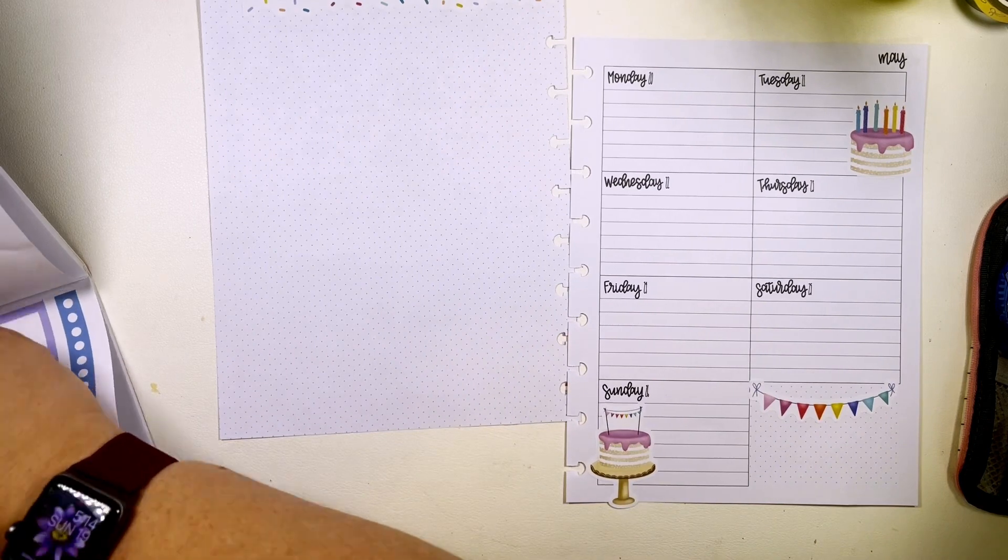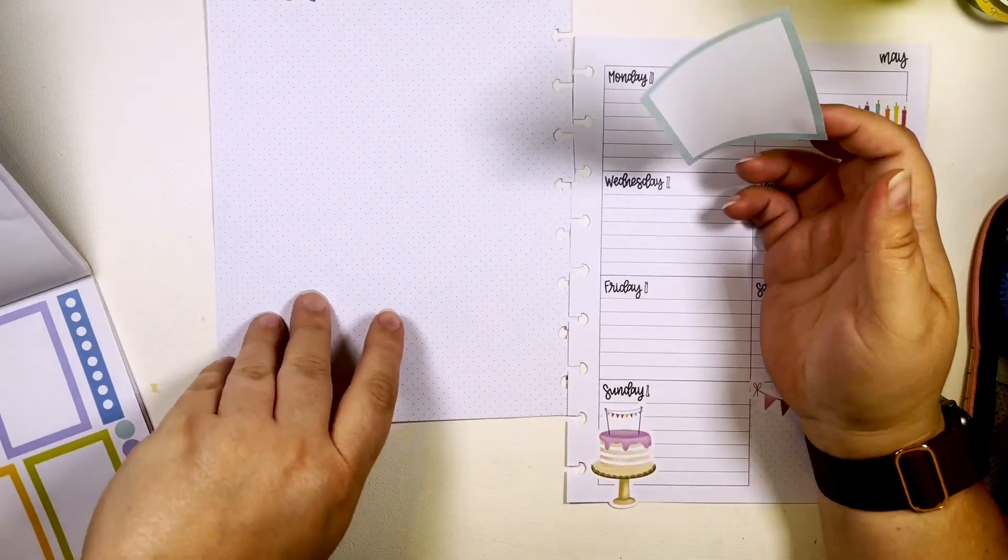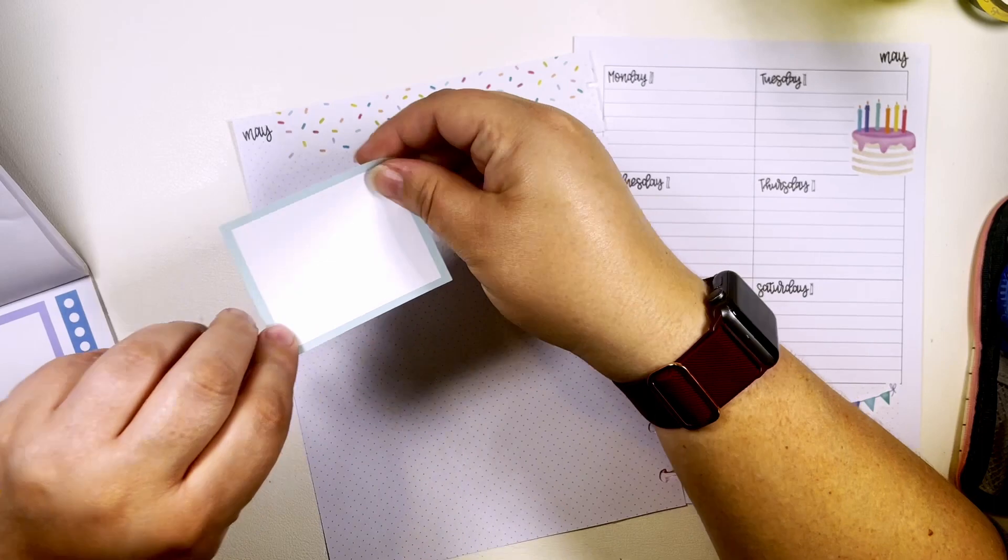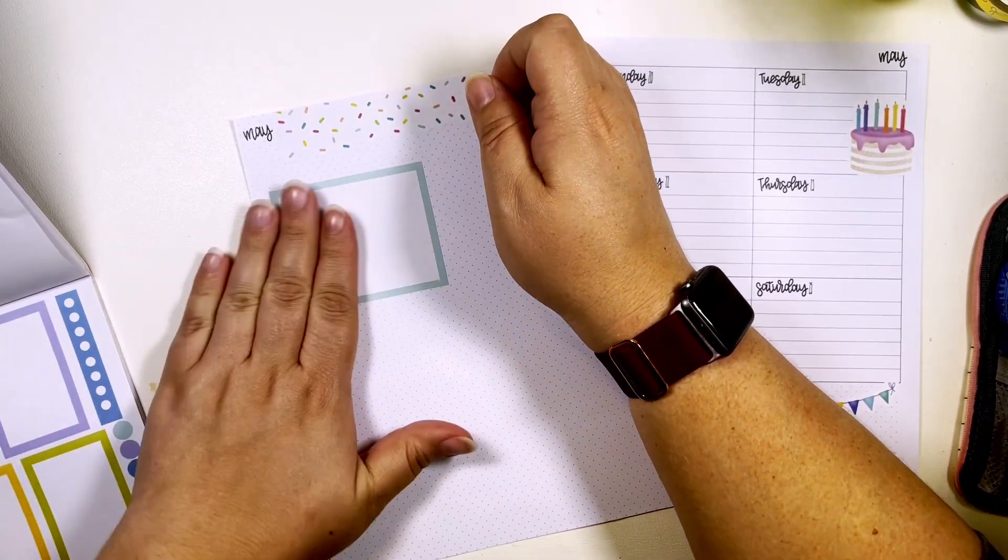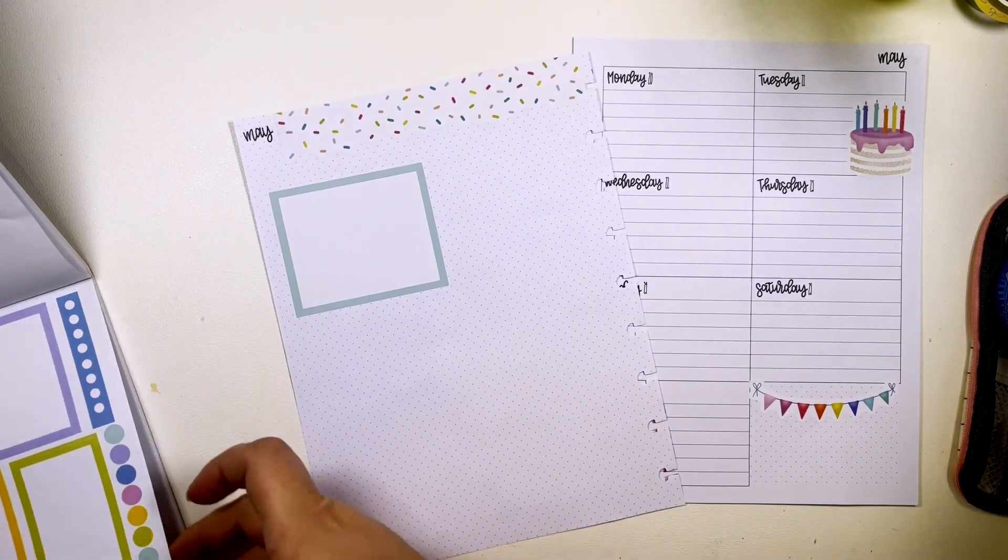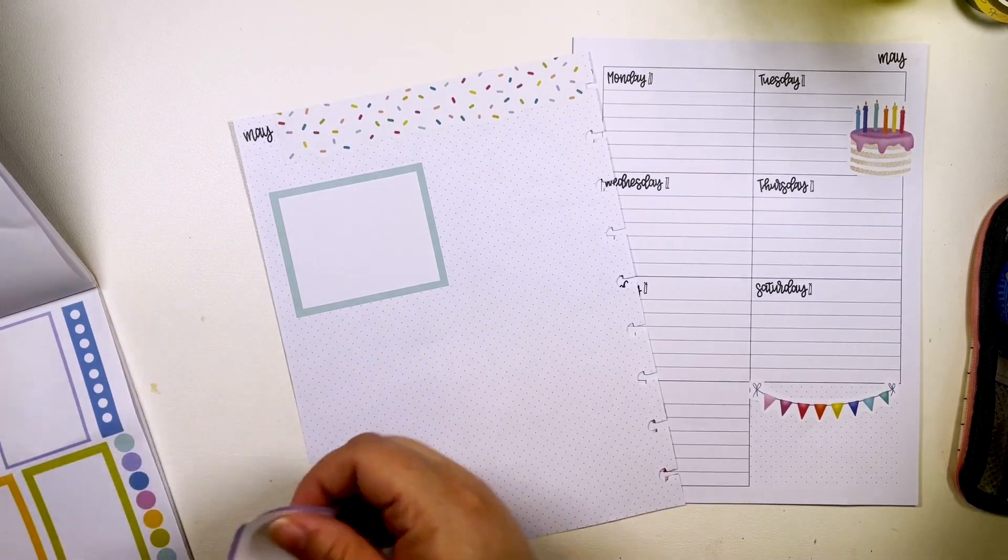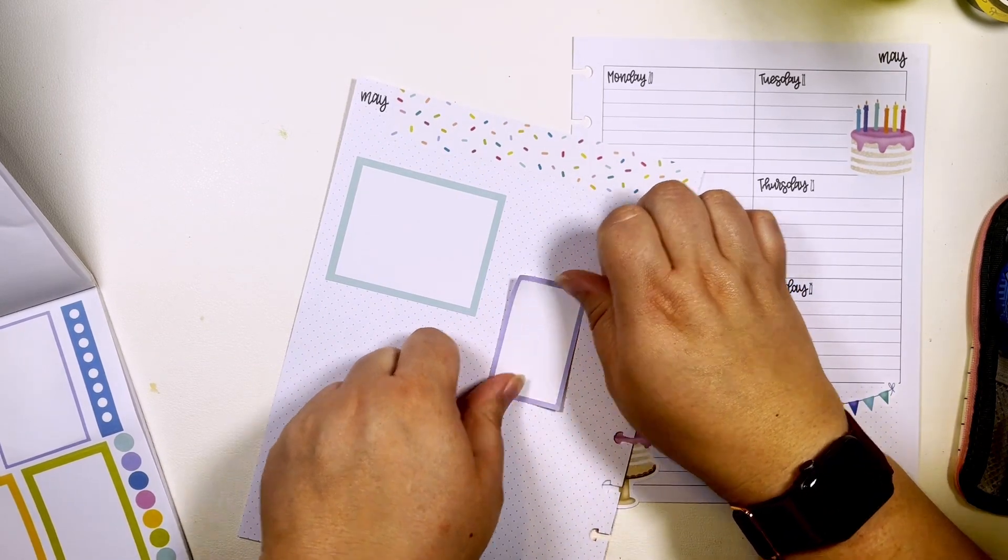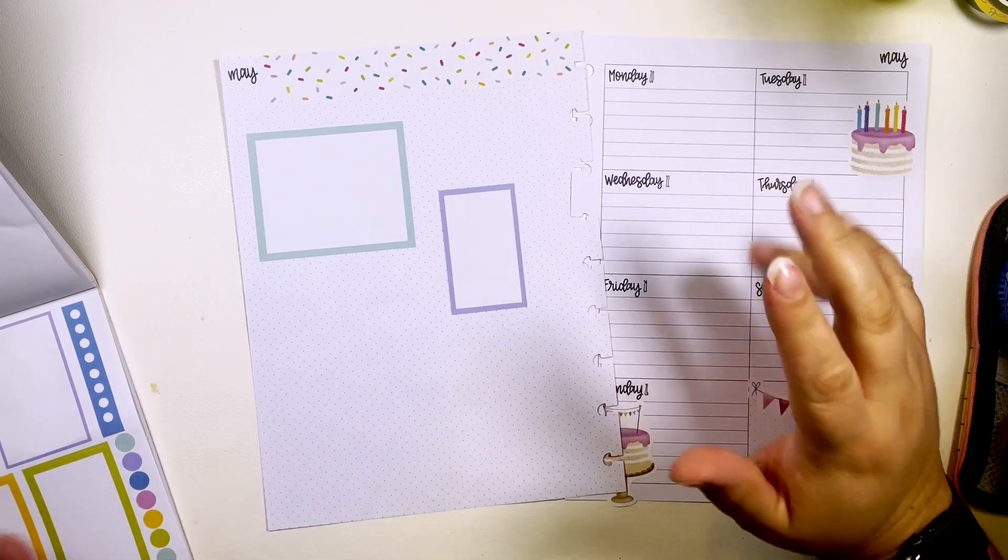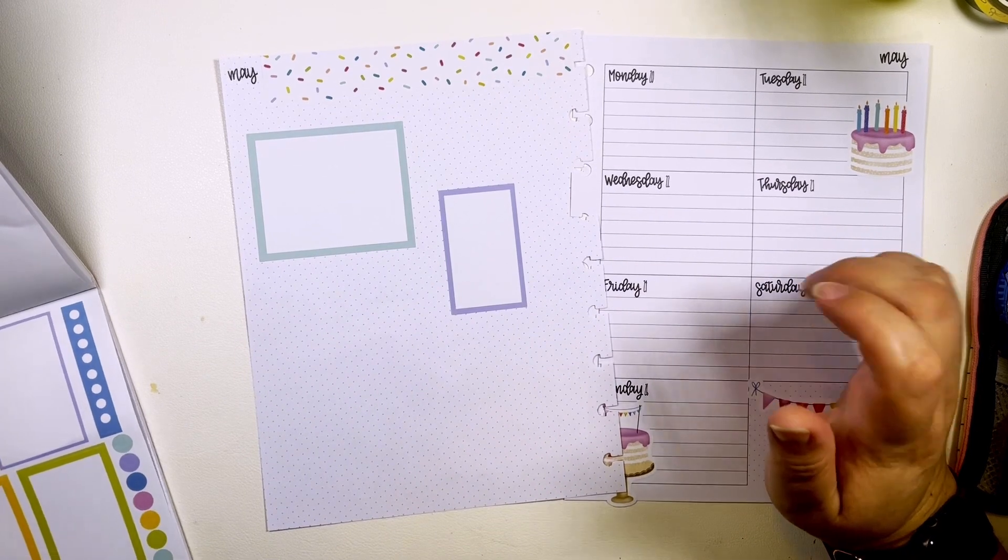On this side I'm gonna take this big box, lay it out like so, and then maybe a purple box. Purple, blue, bluish purple.